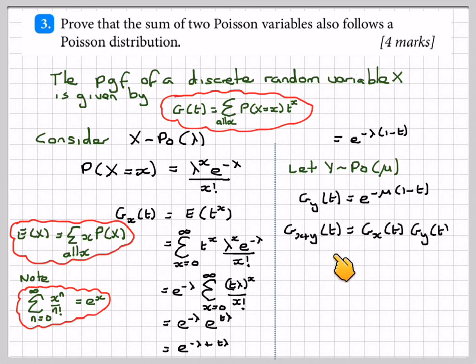g_{X+Y}(t) will be g_X(t) times g_Y(t), which will give me e to the minus lambda times (1 minus t) times e to the minus mu times (1 minus t), which will give me e, (1 minus t) comes as a common factor, so I'm going to be left with minus lambda minus mu, but when I put brackets in, it becomes minus (lambda plus mu) times (1 minus t).